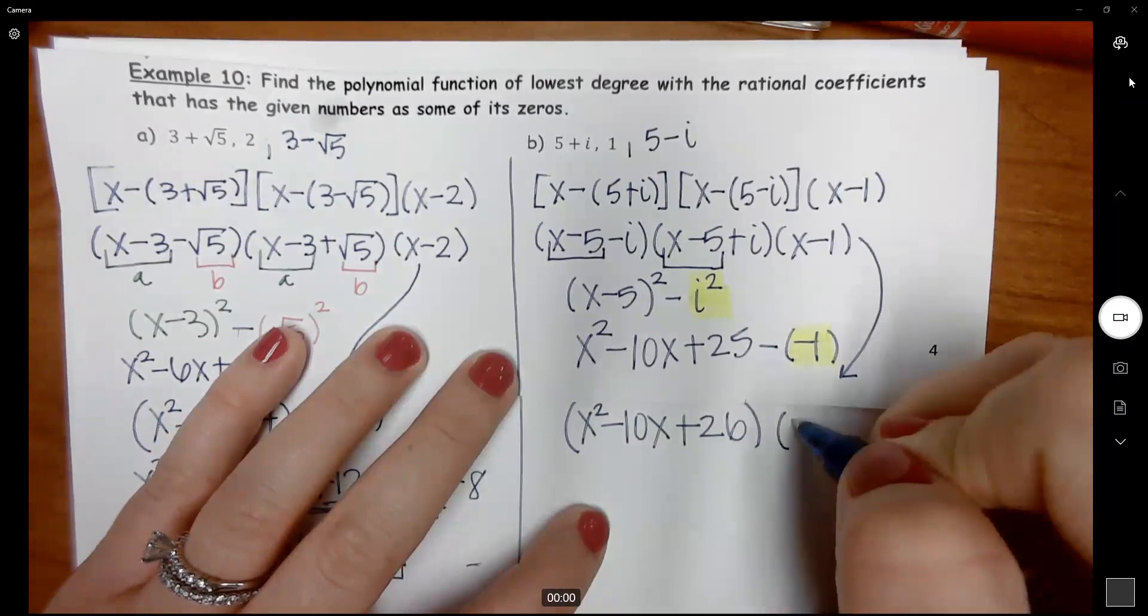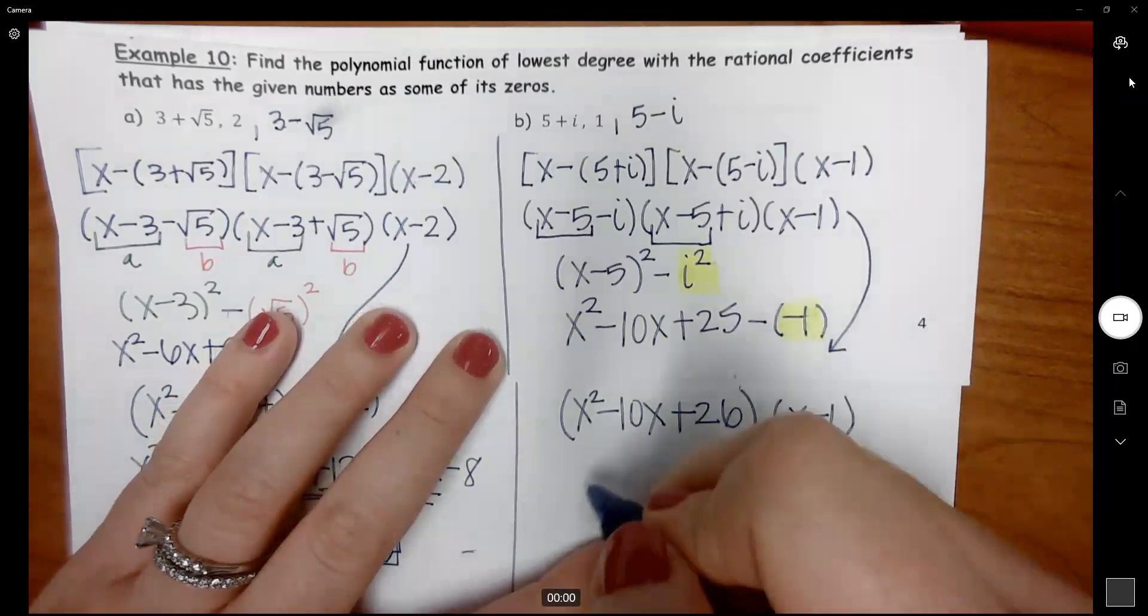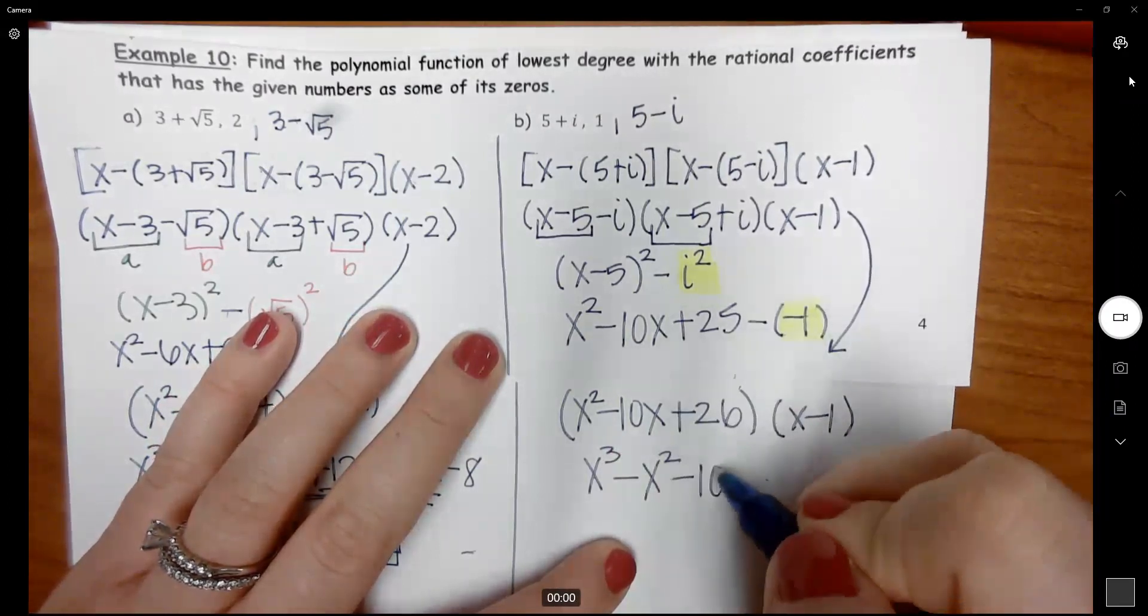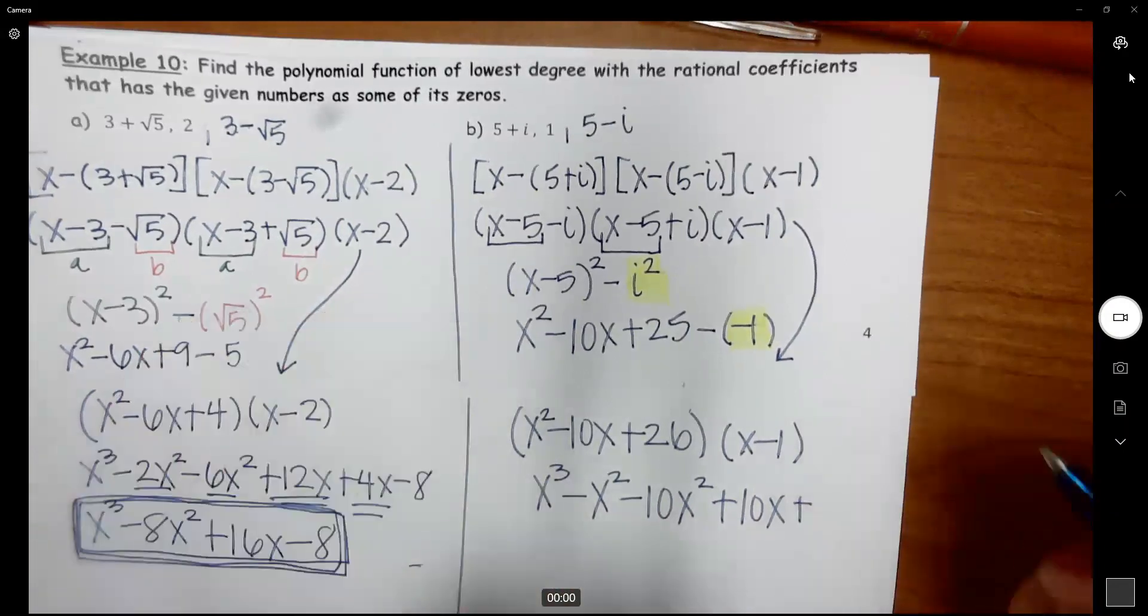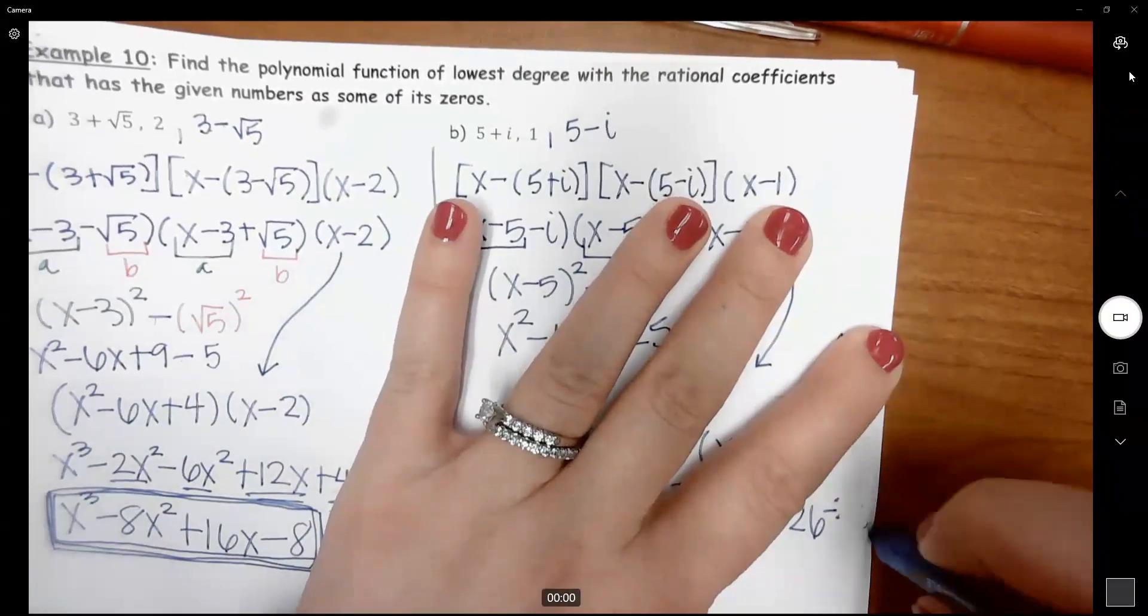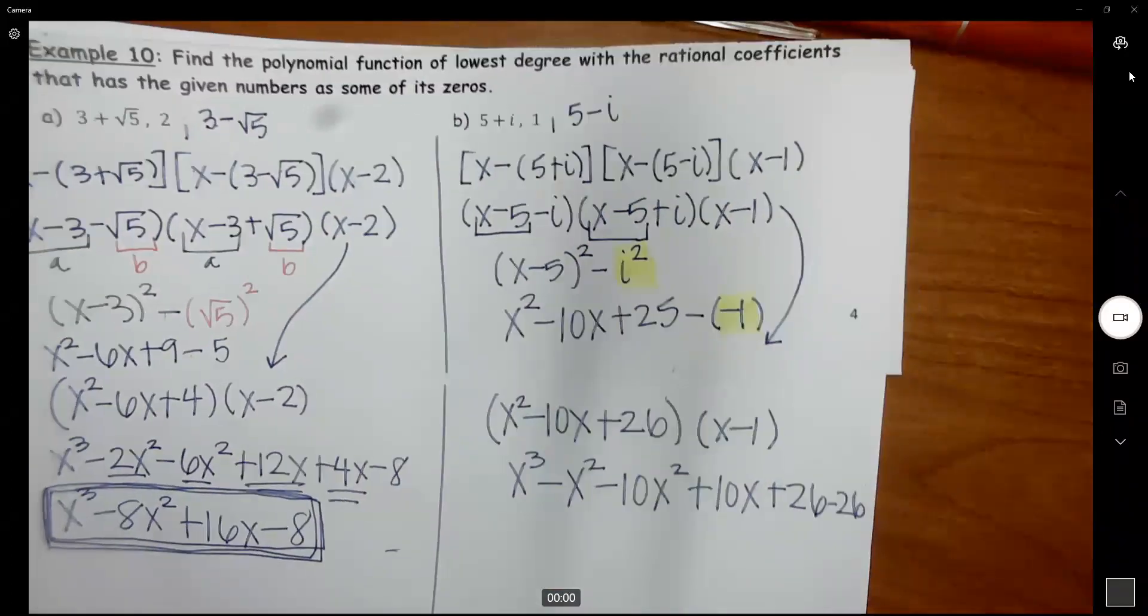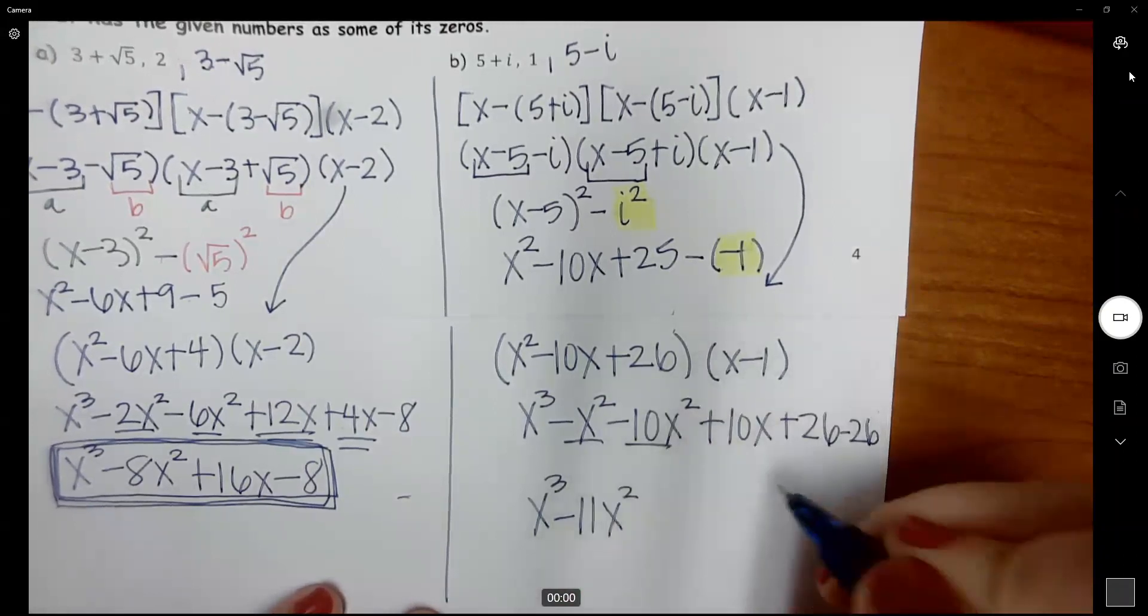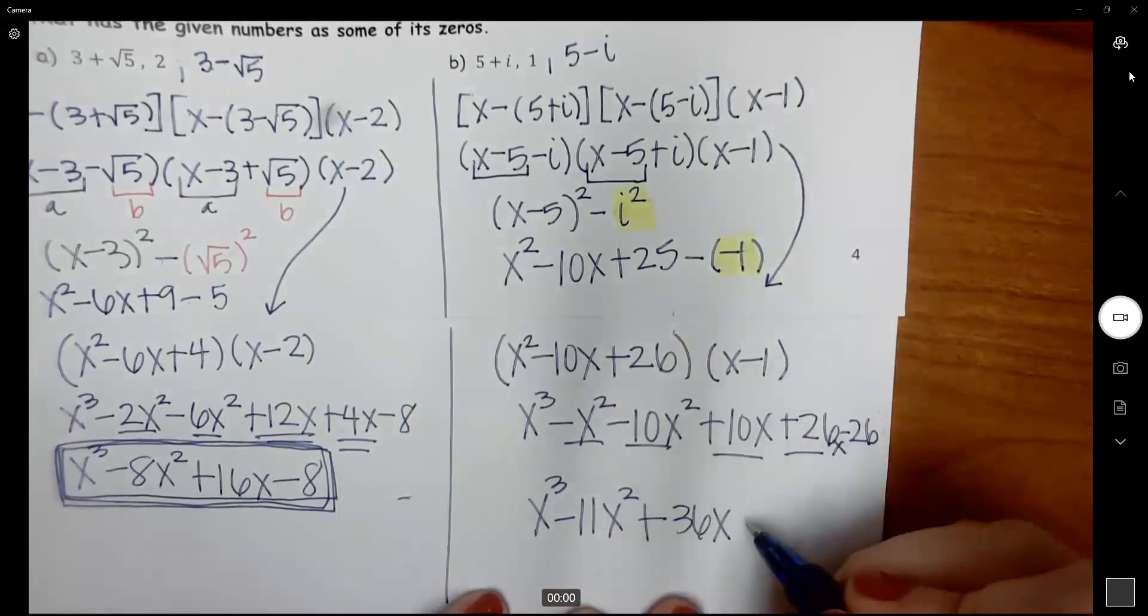And then X minus 1 comes down. And I multiply X squared times both of these, you get X cubed minus X squared, negative 10X times both, negative 10X squared plus 10X, and then 26 times both. And then last up combine your like terms, you get negative 11X squared plus 36X minus 26.